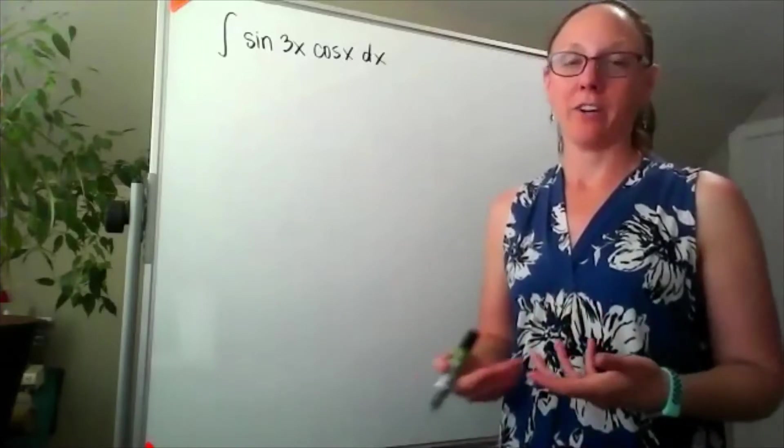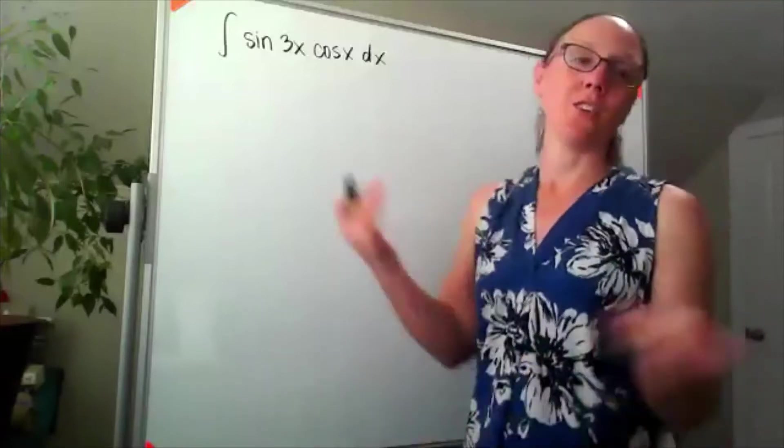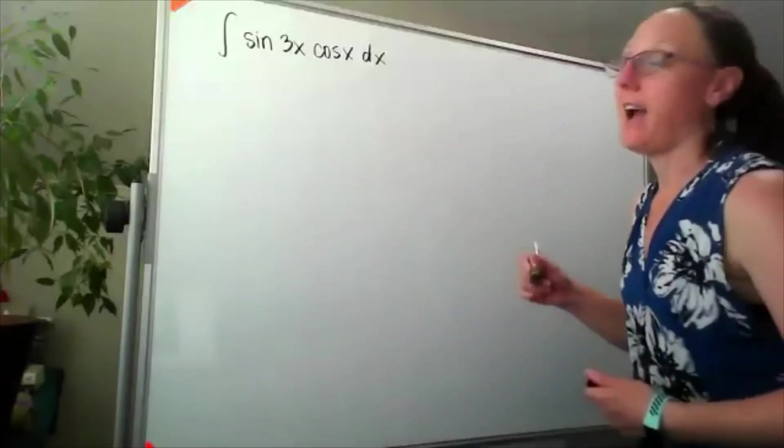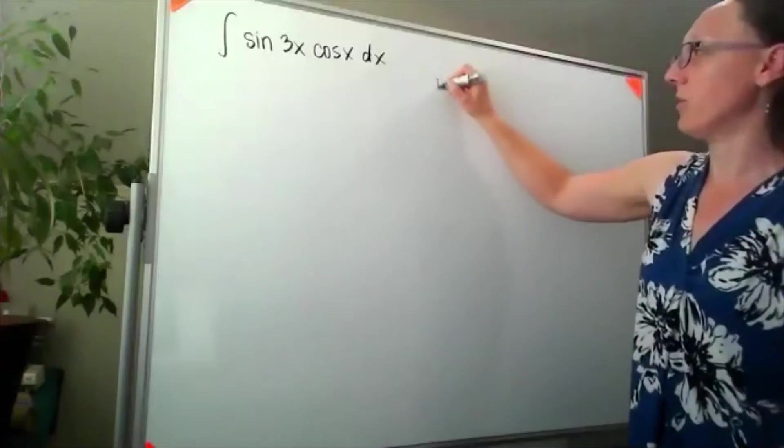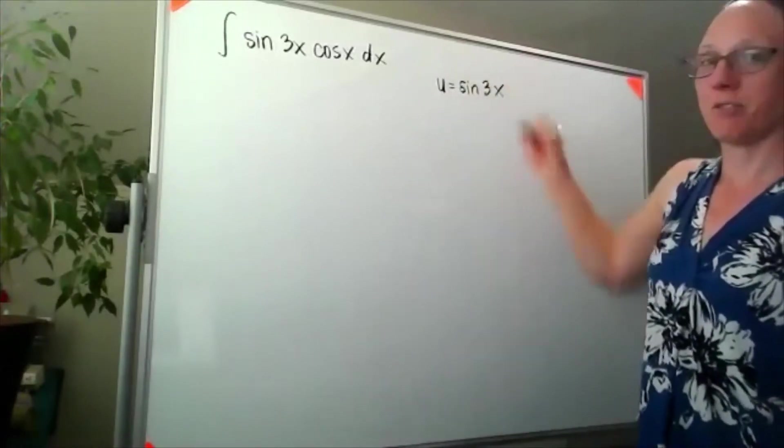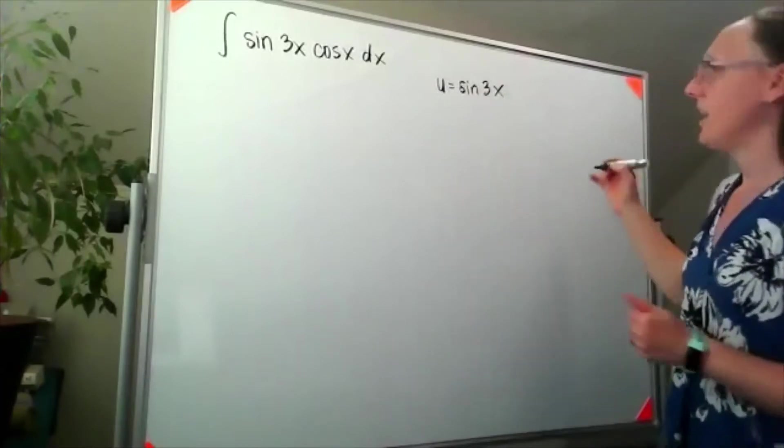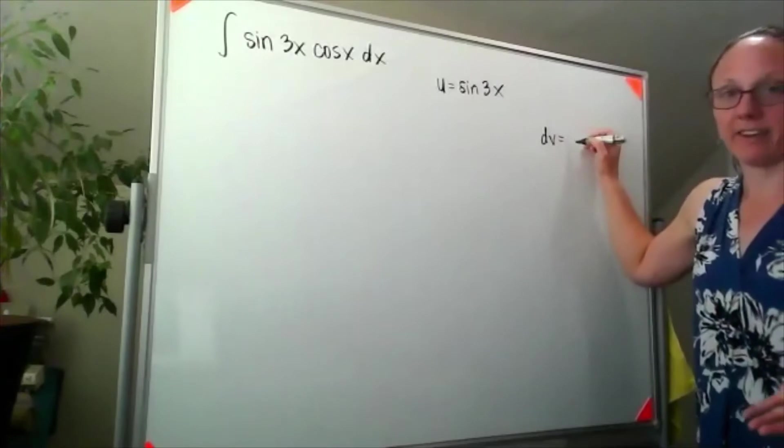So we have a choice because we have trig and some more trig. If we're trying to use our acronym LATE to choose u, they're both T, so it's a toss-up. I'm gonna arbitrarily choose to let u equal sine of 3x, which means the dv would have to be everything else - the cosine x dx.